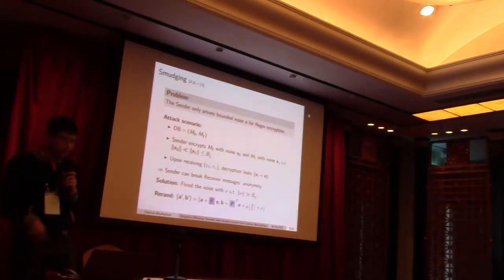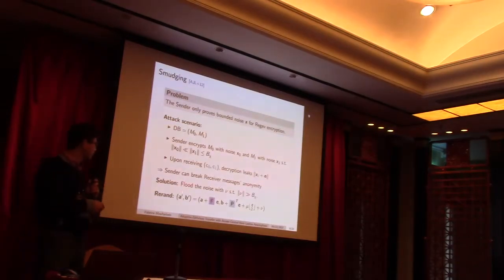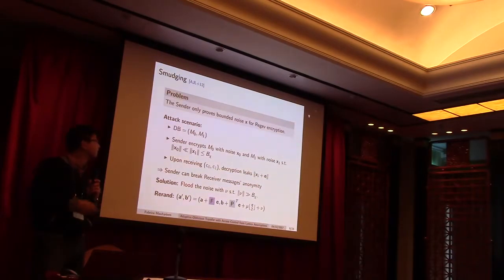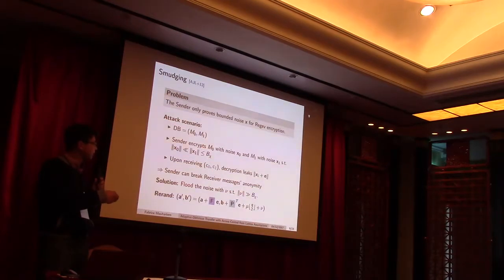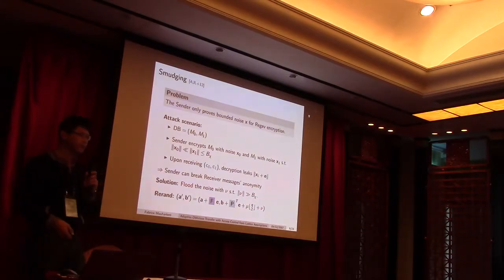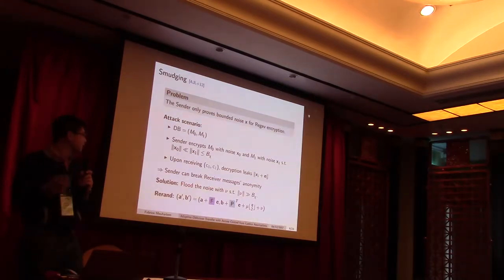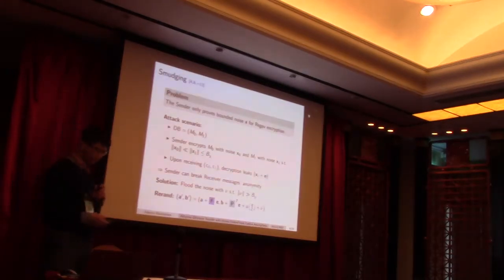So, for instance, if this norm is quite small, we can imagine that it's M0, which has been randomized. And if it's quite big, it will mean that it's M1, which has been encrypted. So, just doing like this is not enough to obtain our security properties. So, to overcome this problem, we just use what is called smudging or flooding. Basically, we add a noise which is bigger than the bound on the LWE distribution, which will be here superpolynomially bigger.